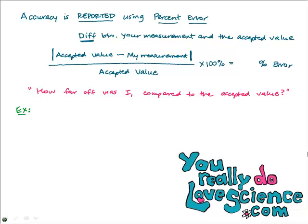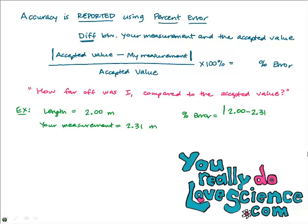Here's an easy example. Let's say the accepted value for the length of a table is 2.00 meters, and your measurement was 2.31 meters. Your percent error would be the absolute value of 2.00 minus 2.31, divided by the accepted value of 2.00, times 100%. You end up with 15.5% error. In a lab, 15.5% error is actually not very good — you want to try to be under 10% error to feel good about your lab results.